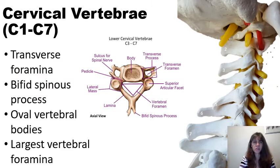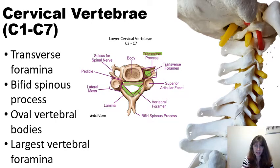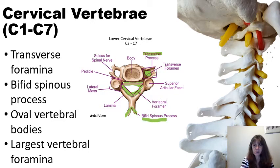Here is a closer look at the cervical vertebrae. This is the transverse process and you can see the hole described earlier — the transverse foramen. You can see the vertebral foramen in the cervical vertebrae is a little bit triangular in shape and is larger at the top of the spine, getting a little bit smaller as it progresses down through the rest of the vertebrae. You'll notice the bifid spinous process in the cervical vertebrae, and this is the vertebral body.